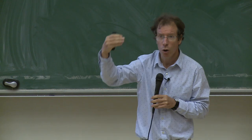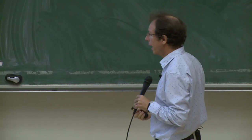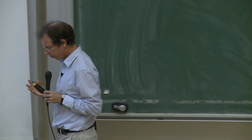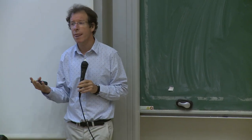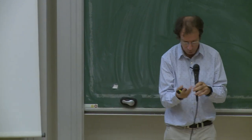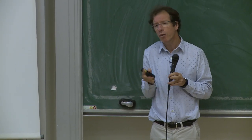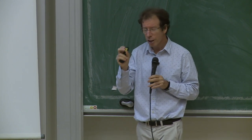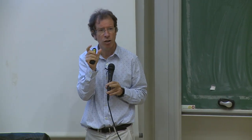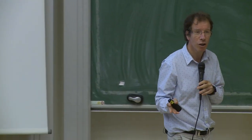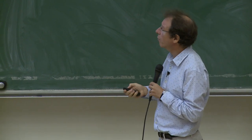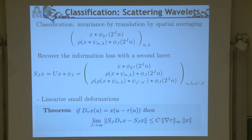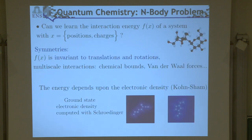This is what I call a scattering transform: apply a wavelet transform, a ReLU, a second wavelet transform, a second ReLU. A very important property is that this is stable to deformation. If you slightly deform an image, you expect the class not to change. A digit which is deformed is still the same digit if the deformation is small. If you take an image and deform it — which amounts to a space-dependent translation — in the scattering domain, the Euclidean distance is of the order of the size of the deformation.